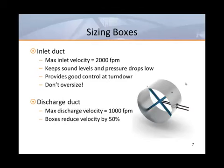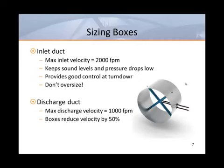Besides control problems, oversized inlets can also cause noise problems. Selection software can predict noise levels at maximum flow based on inlet velocity and pressure, but oversized inlets can result in air squeaking around damper seals at minimum flow, resulting in pure tone noise. Since the noise created is dependent on pressure, the condition of the damper seals, and the roundness of the duct, this is a sound that cannot be predicted by any manufacturer's catalog or software.